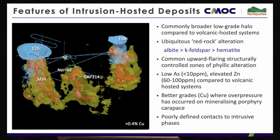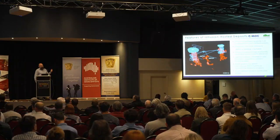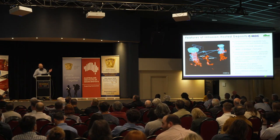Better grades in our systems occur where you have an overpressure environment. No overpressure — grade is poor. Overpressure with a fractured carapace gives better hypergene grades. The challenge is that the incoming porphyry is intruding into a host that has not yet fully solidified or still retains latent heat from crystallisation, resulting in poorly defined intrusive contacts and more complex correlation between intrusive phases.